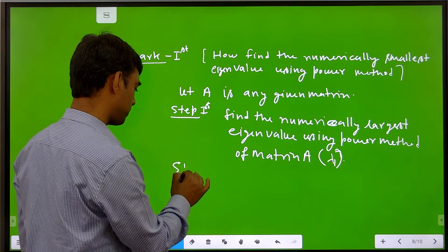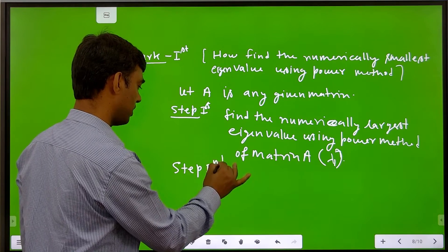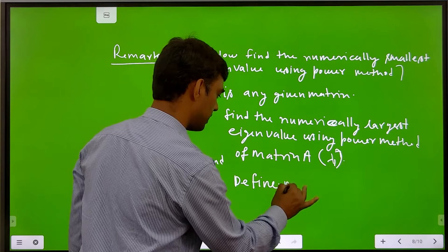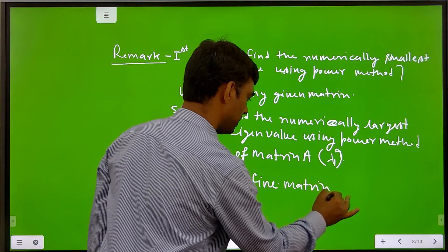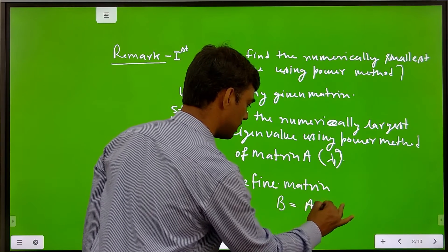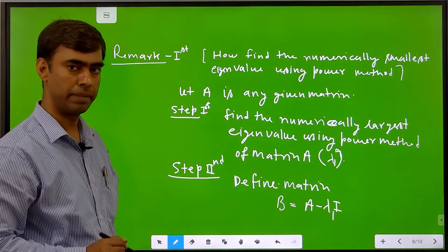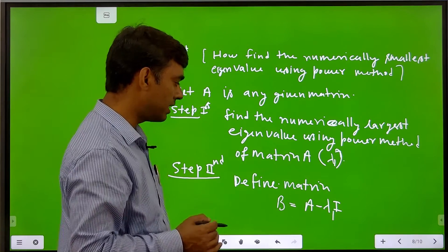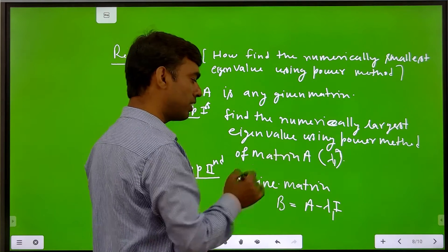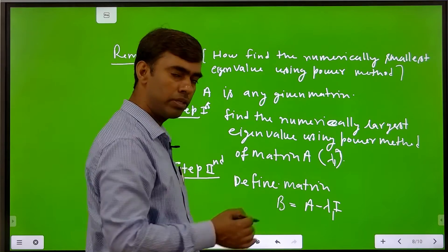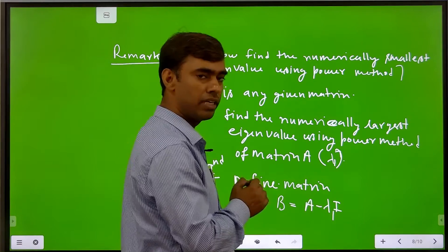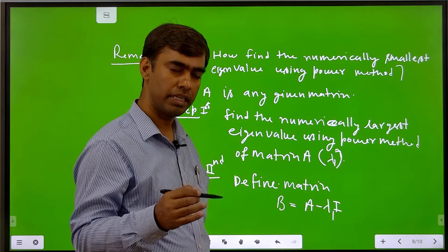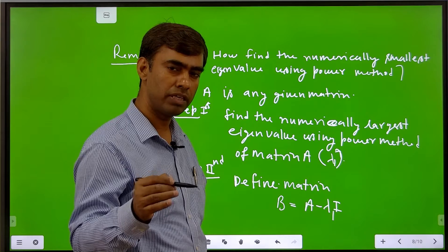Step two: define a new matrix B as A minus lambda 1 times I. As we know, lambda 1 is a constant. The eigenvalue of B equals the eigenvalue of A minus lambda 1. This follows from the property: eigenvalues of A minus K·I equal the eigenvalues of A minus K.